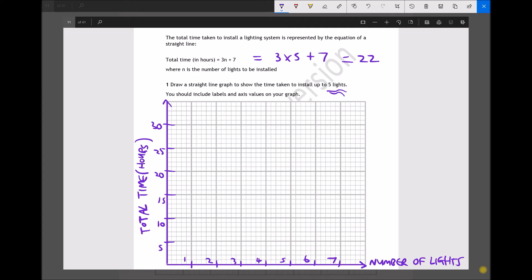Now what we need to do is find the time taken to install different numbers of lights. So if we wanted to install no lights, 0 lights as an example, then n up here would be 0. If we wanted to install 1 light then n would be 1 and so on. So to install no lights when n is 0, 3 times n is 0, but we need to add 7. So 0 plus 7 is 7. So here 0 lights is 7, 5, 6, 7 on our graph.